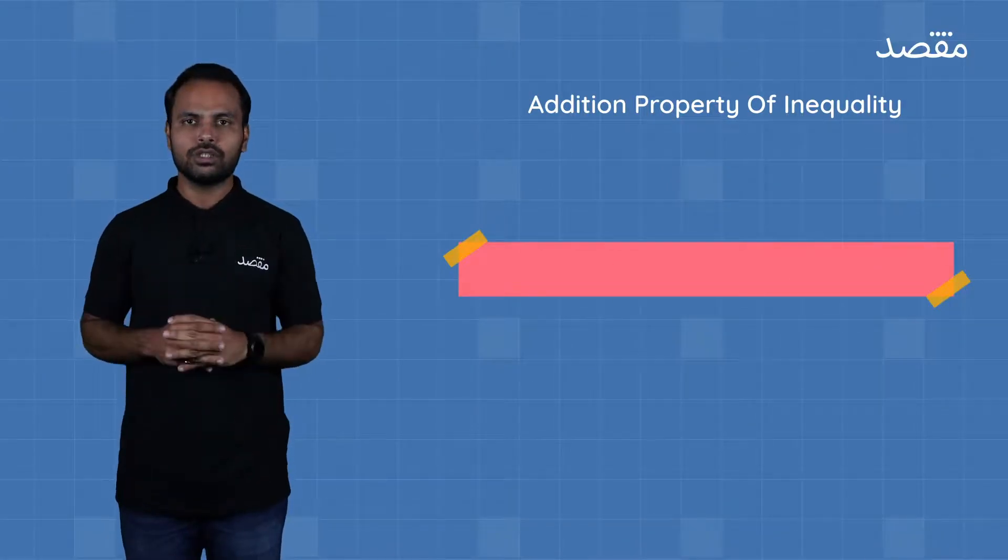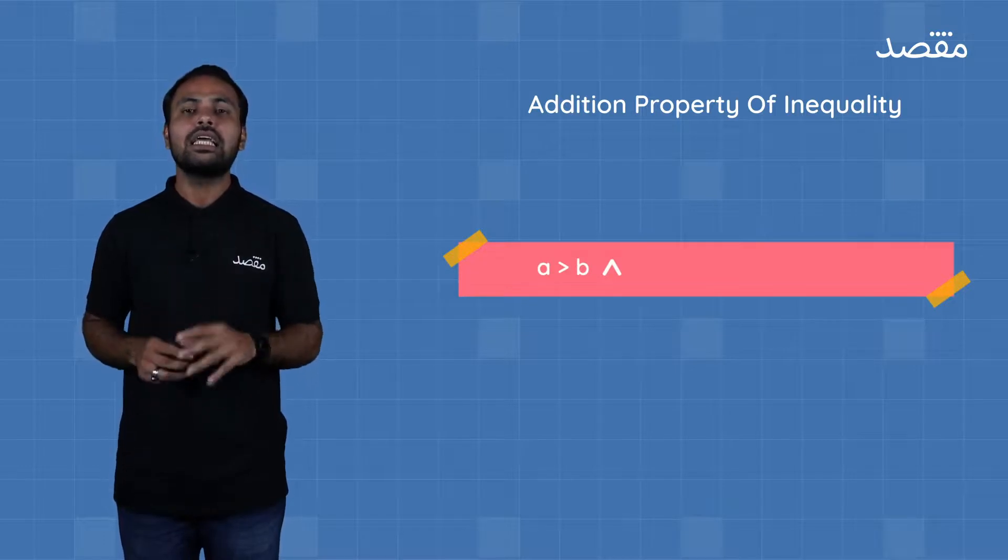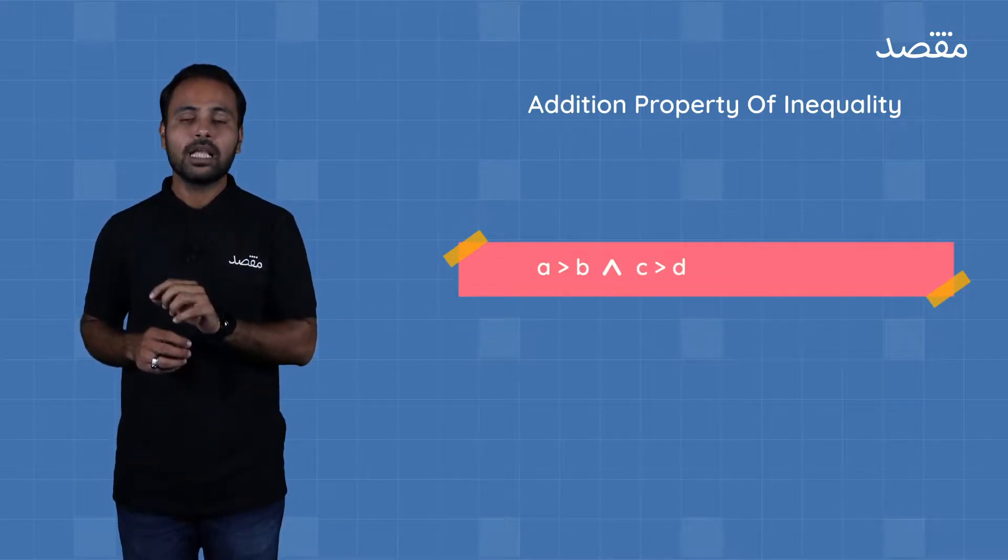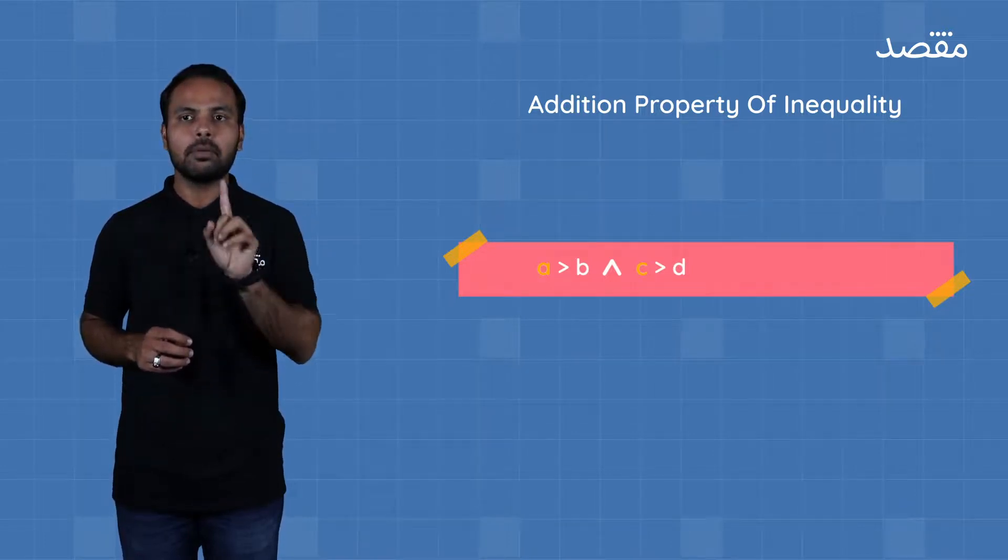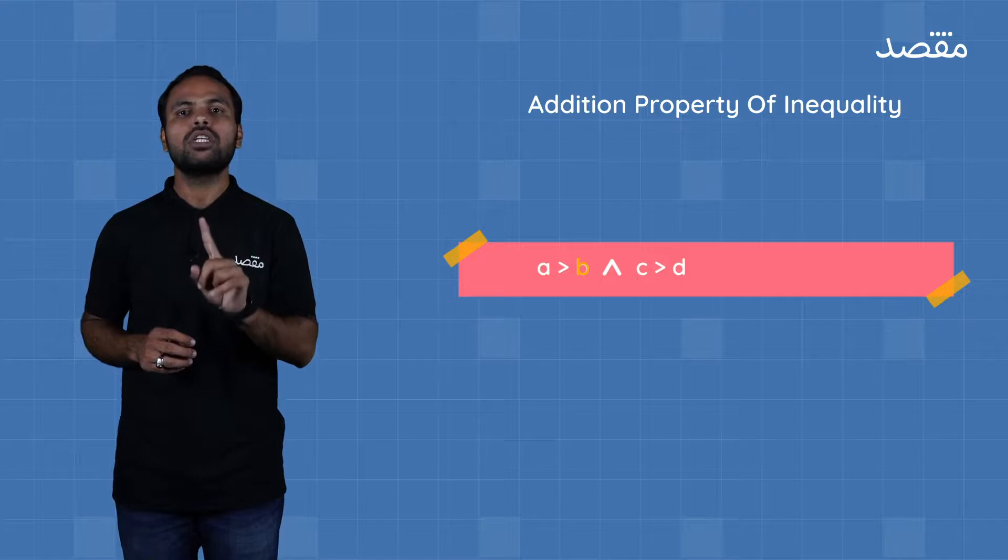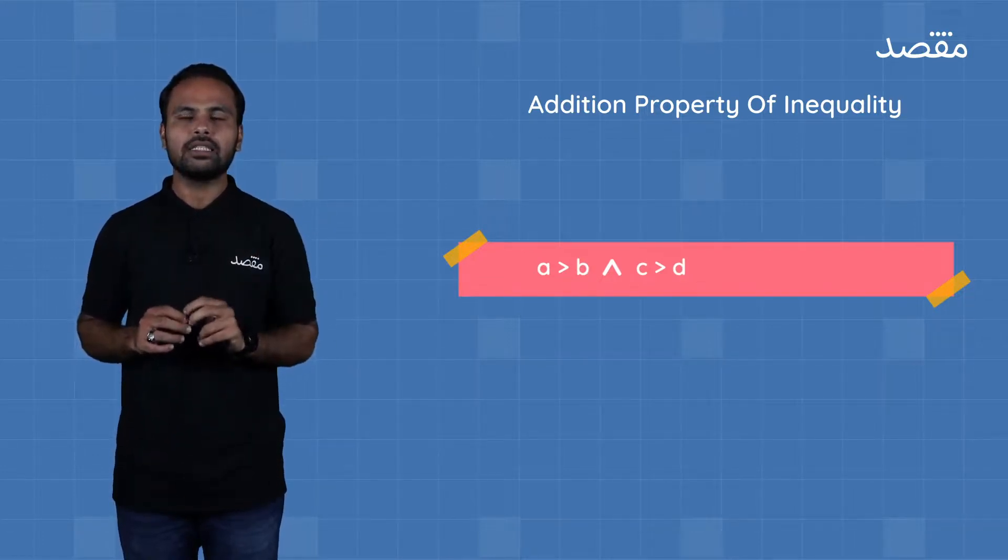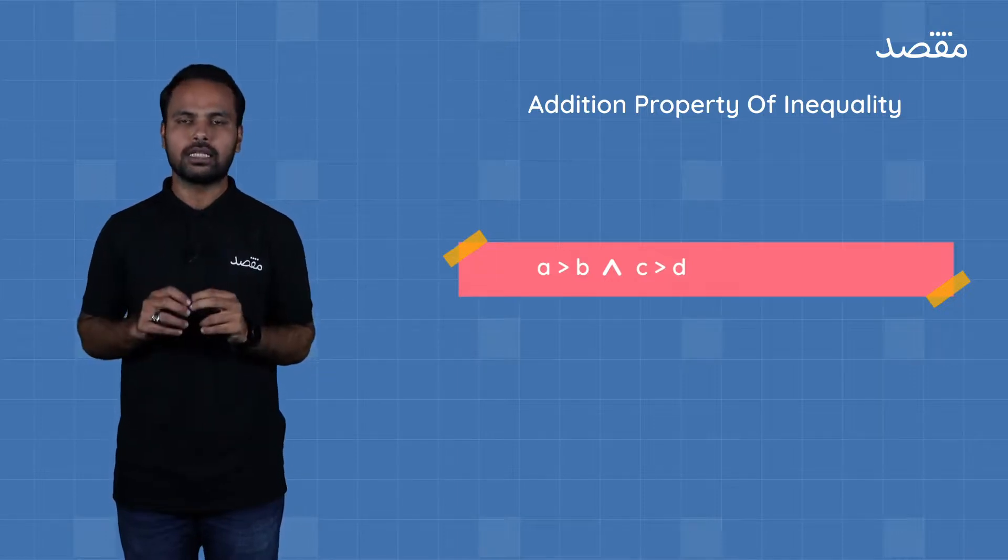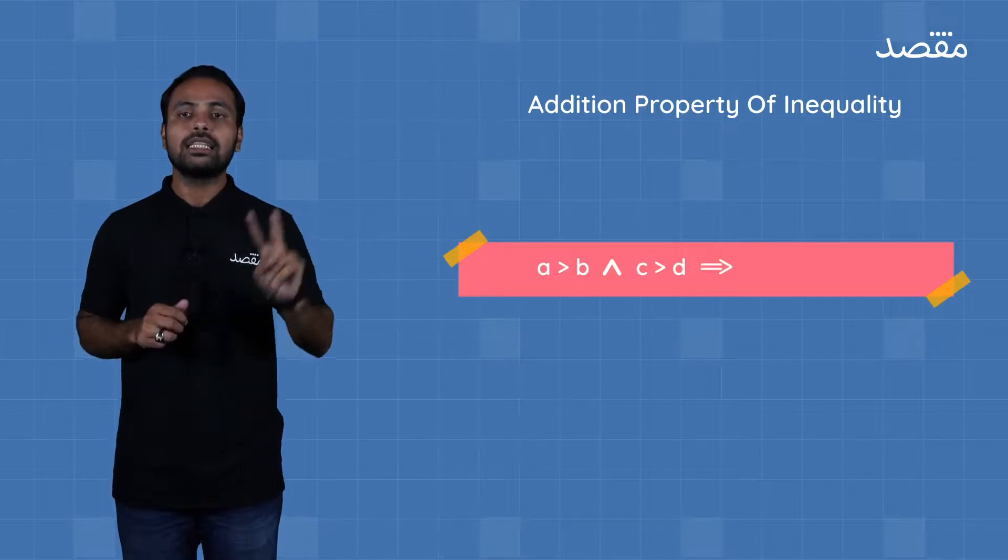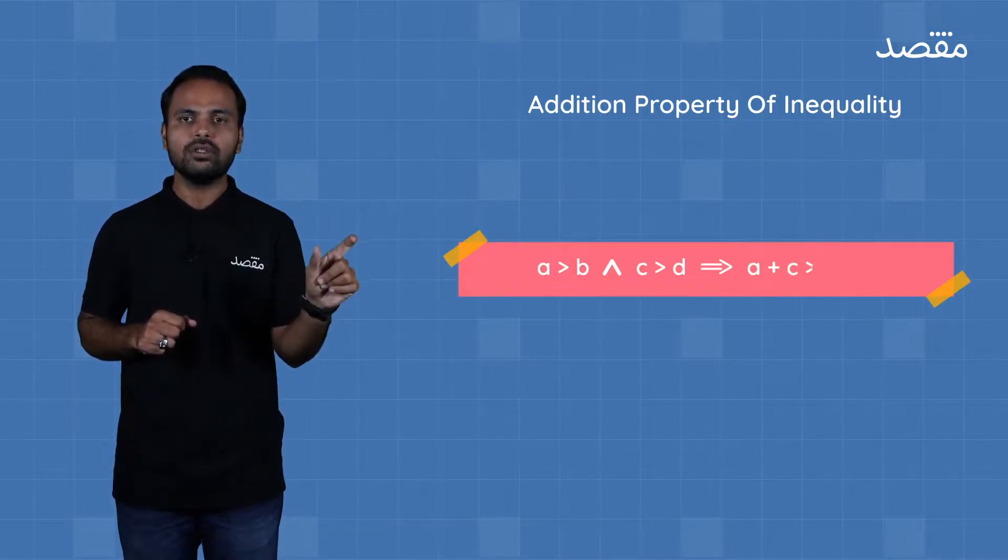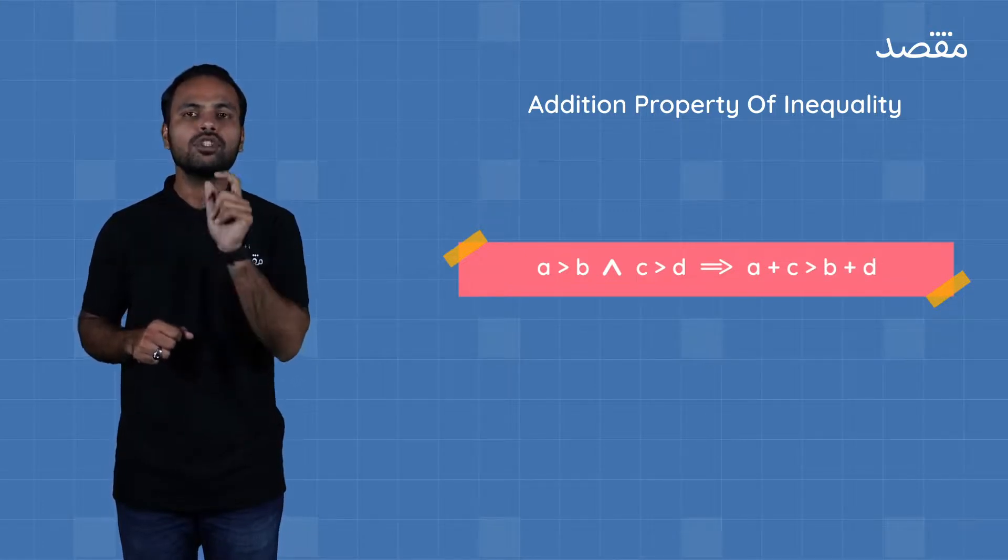Let's take two relations: we have a greater than b and the second relation is c greater than d. Now you need to note that in both these relations, a and c are the bigger values and b and d are the smaller values. Now let's do something: we add both the bigger values together and both the smaller values together. Now in one inequality, the sum will be that a plus c, which is the sum of the bigger values, will be greater than b plus d, which is the sum of the smaller values.